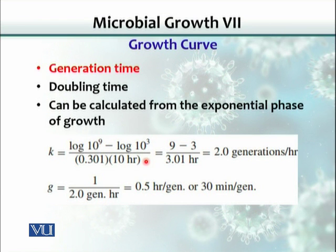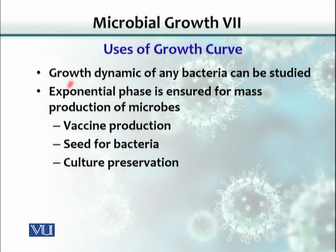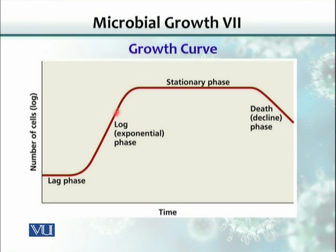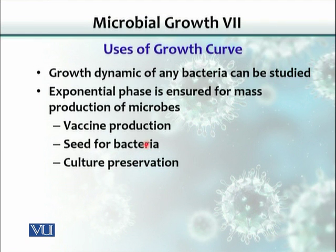This is a very useful calculation to learn. Other uses of the growth curve include studying the growth dynamics of any bacteria, which is important for mass-scale production such as vaccine production. When preserving bacteria as a seed culture, we target the log phase, when bacteria are very active. If we wait until the stationary phase, bacteria are already dying. So we always look for log-phase organisms — young and very active — for seed cultures and preservation.